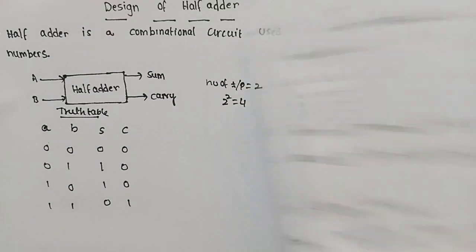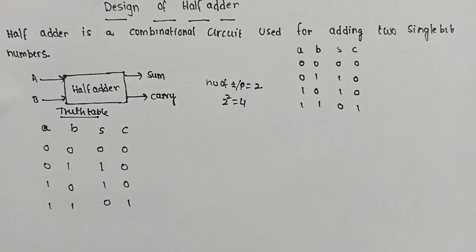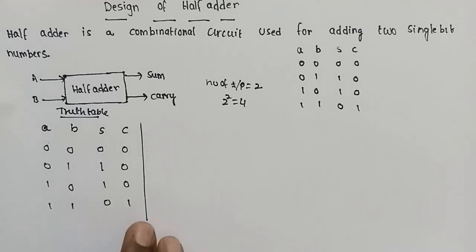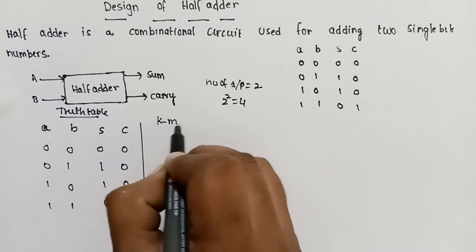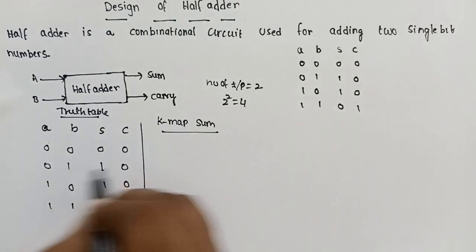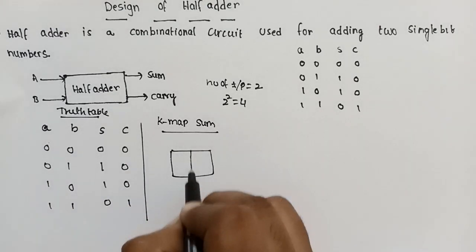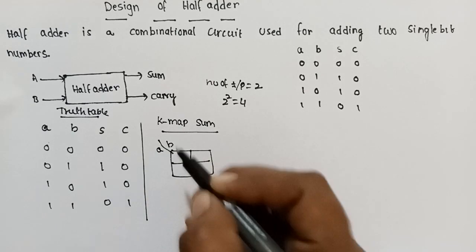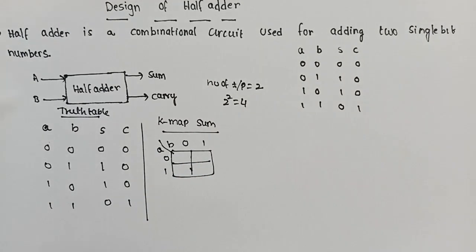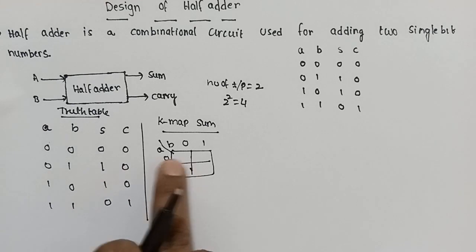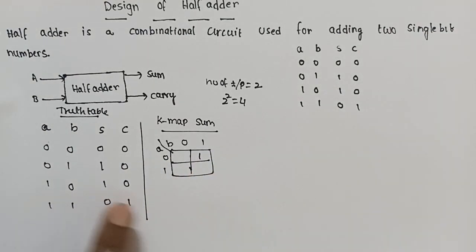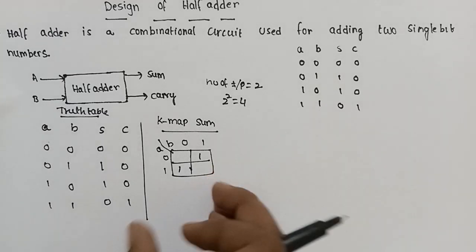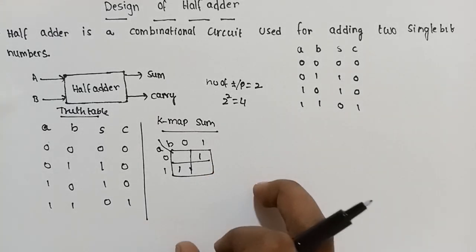The next step is to simplify the Boolean expression for each output using a K-map. There are two outputs, so we use two K-maps. First, the K-map for sum. Since there are two inputs, we use a 2-variable K-map. For the sum, place the values: the combination of 0 and 1 entries.